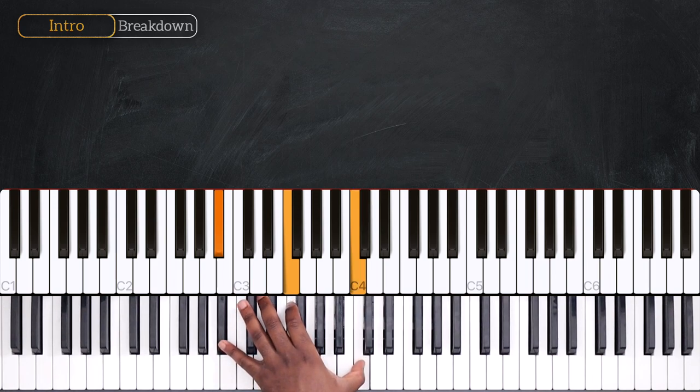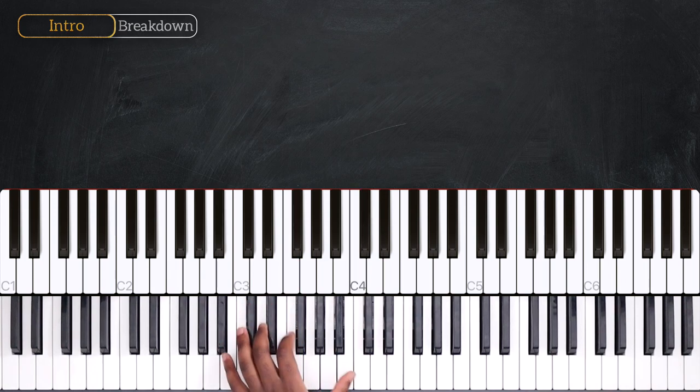So, we're starting with an arpeggio on the left over Bb, Bb, F, Db and then C like this. Doing that, I have C on my right hand.